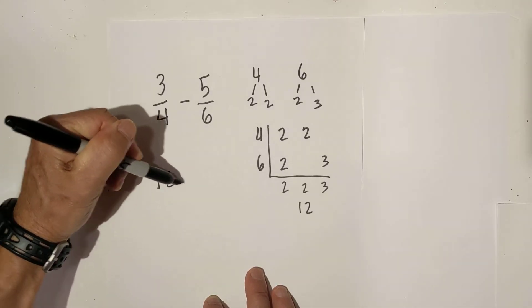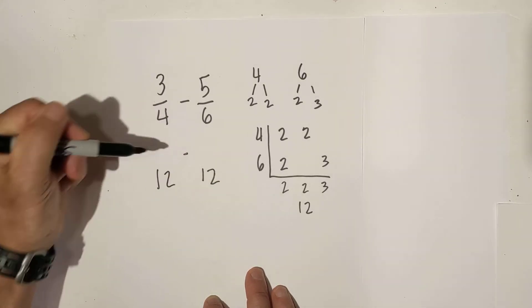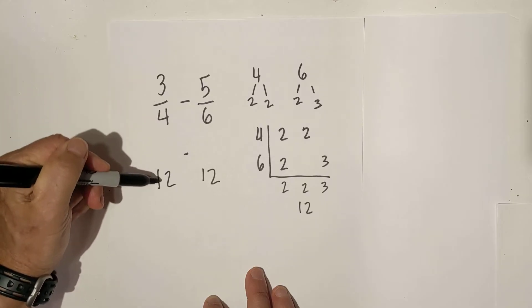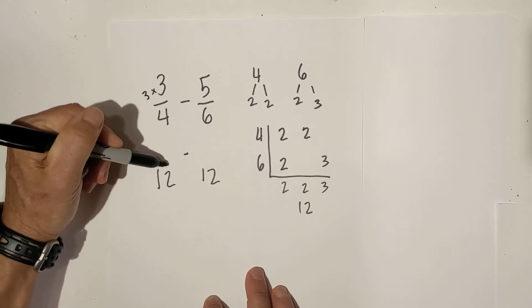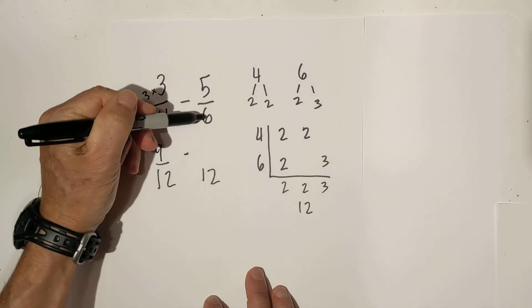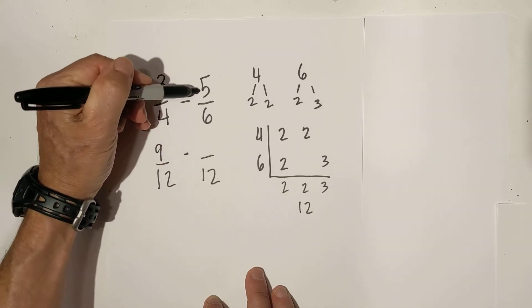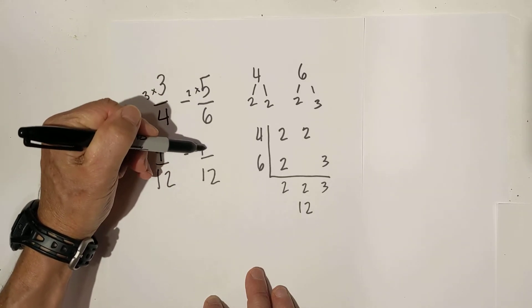Now I just rewrite the fractions. And four goes into twelve three times. Three times three is nine. Six goes into twelve two times. Five times two is ten.